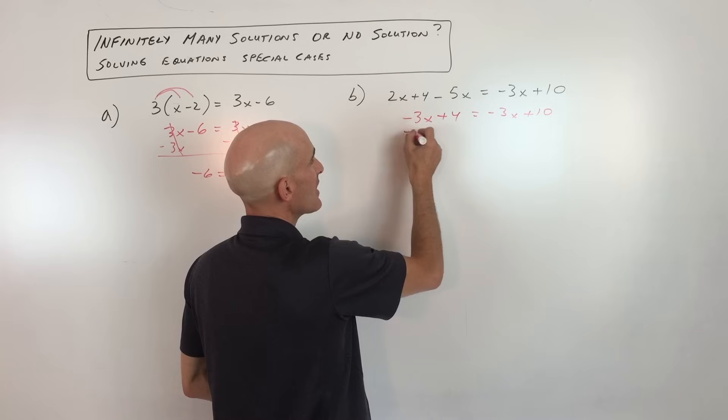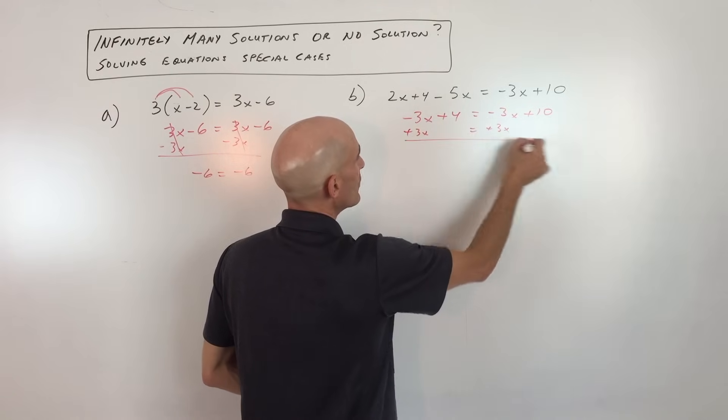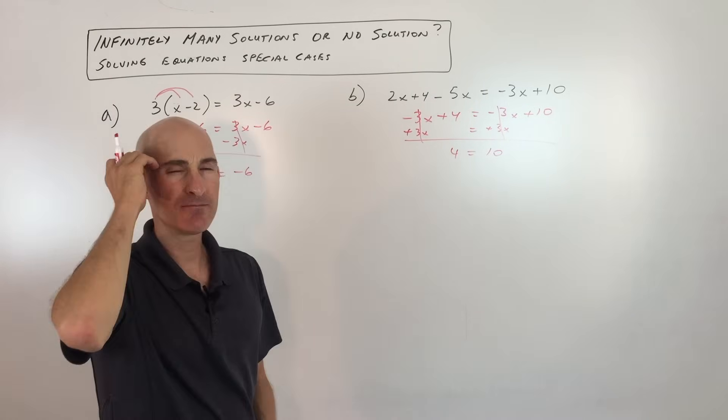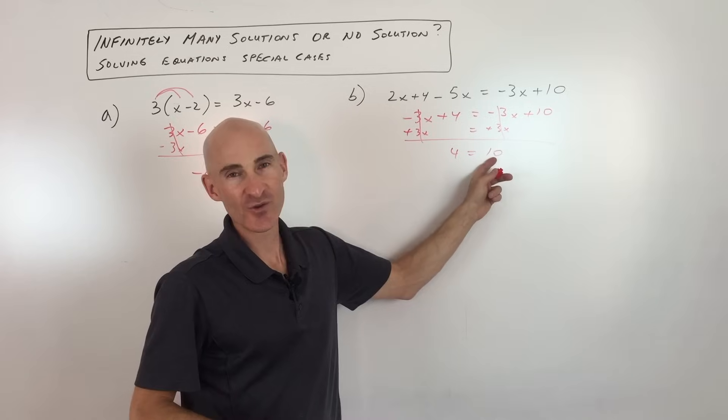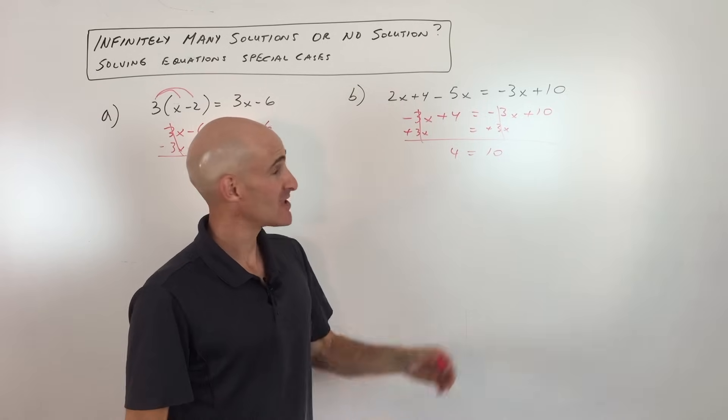Okay, now if I add 3x to both sides, look what happens. These cancel out. I get 4 equals 10. Now, if I think about that for a minute, wait a second, 4 will never equal 10. That doesn't even make any sense. This is a nonsensical answer. It doesn't make any sense.